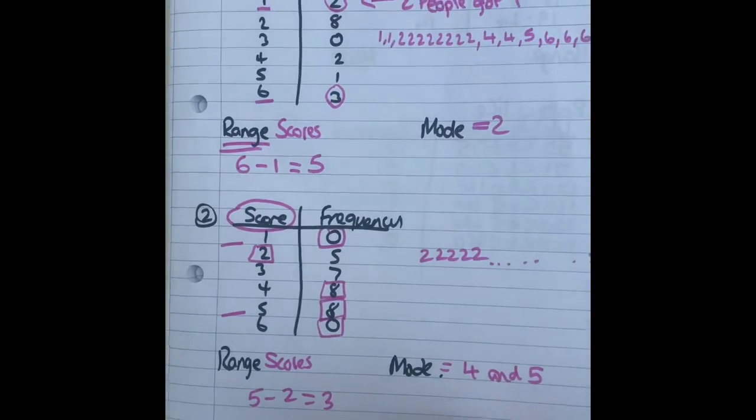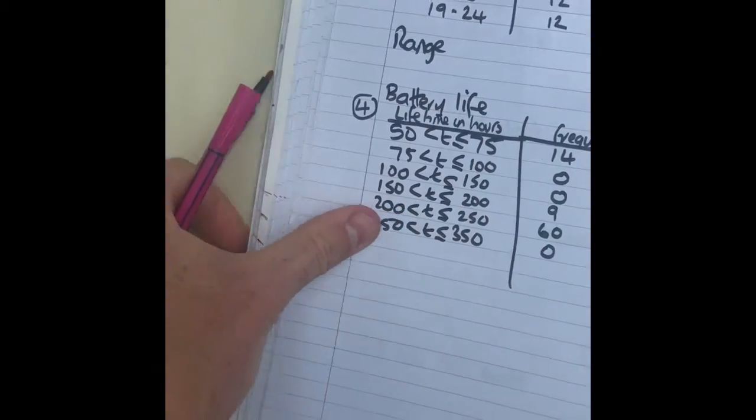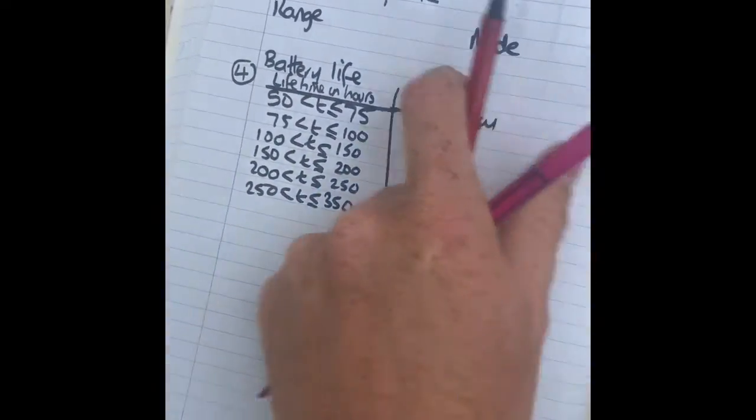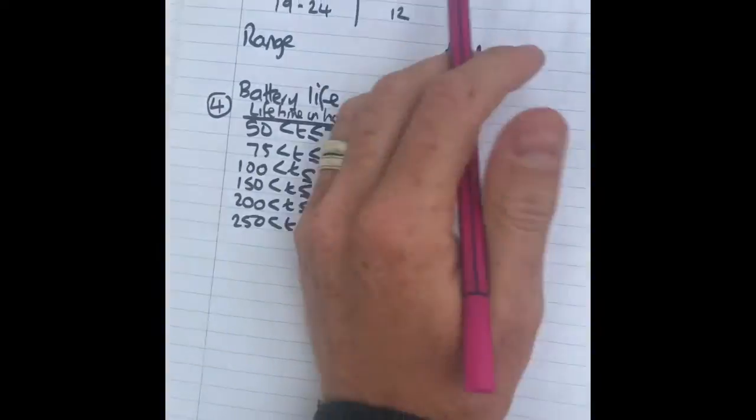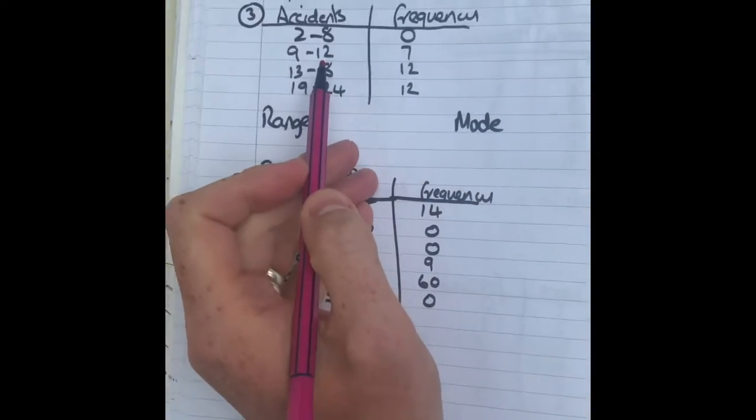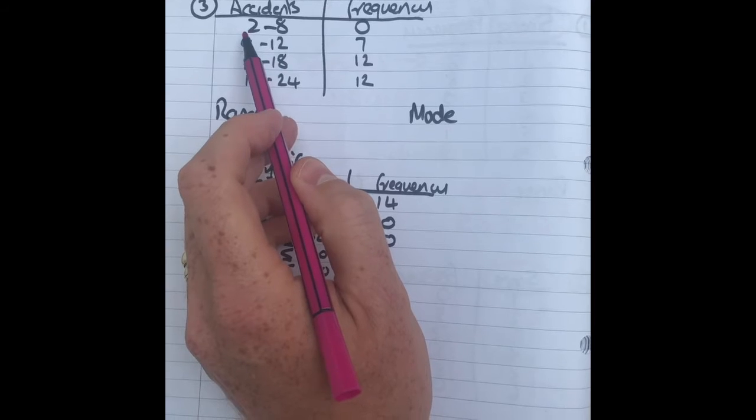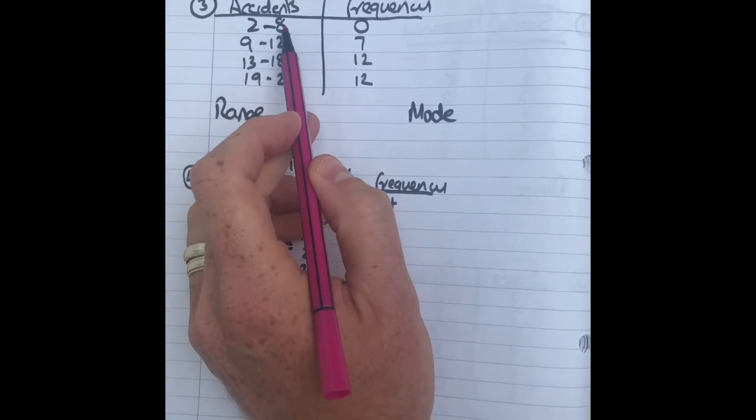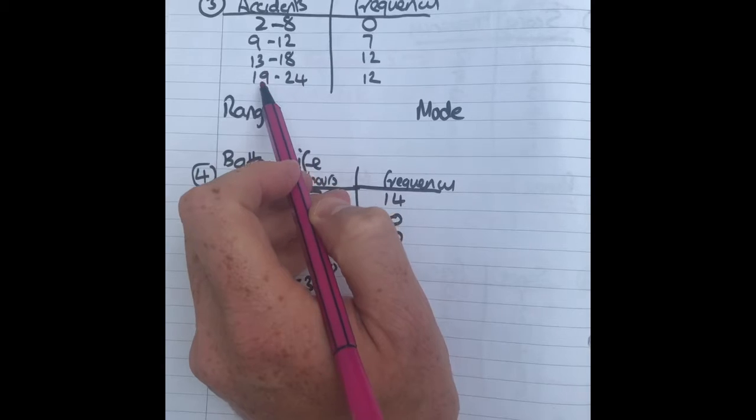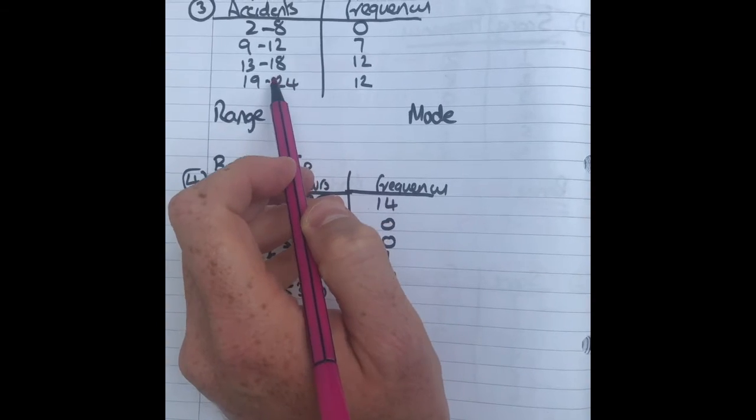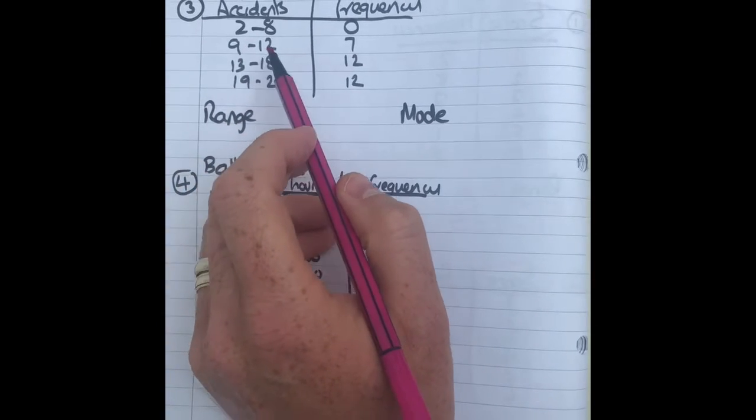Question three. This is where it gets completely more difficult. You have what's called grouped tables. If you notice at the start here, you've got a group of data. So this is for reported accidents: 2 to 8, 9 to 12, 13 to 18, and 19 to 24 are the groups.